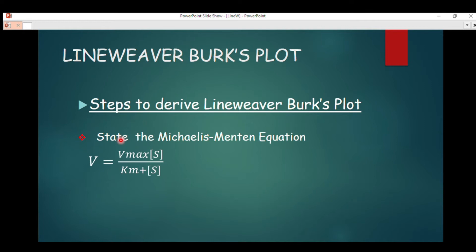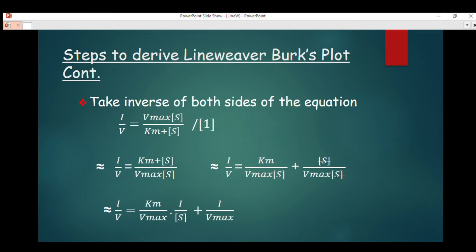The first step in deriving the Lineweaver-Burk plot is to state the Michaelis-Menten equation. From enzyme kinetics, the Michaelis-Menten equation is given by v, which is the velocity, equals V_max, which is the maximum velocity, times the substrate concentration, divided by K_m, the Michaelis constant, plus the substrate concentration S.